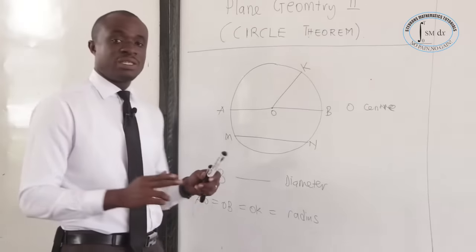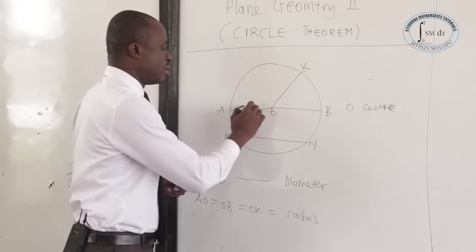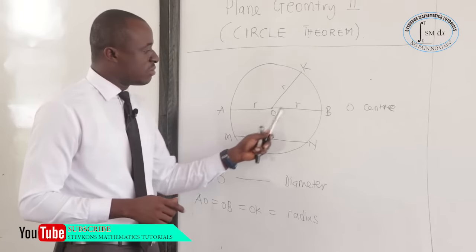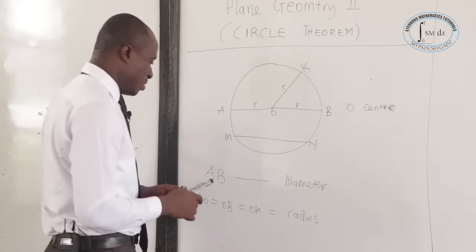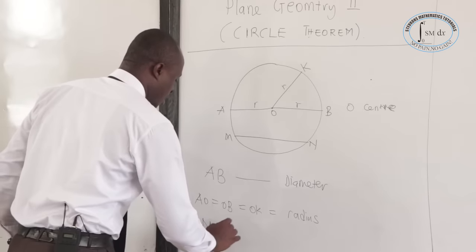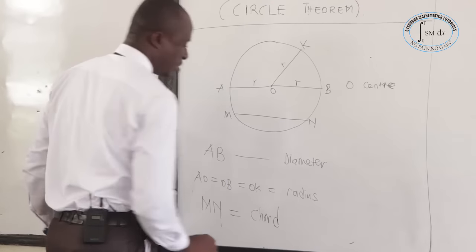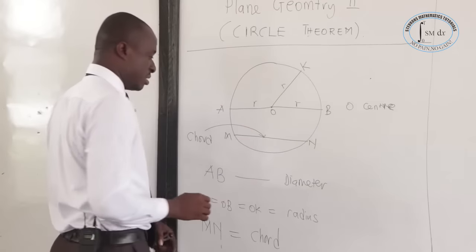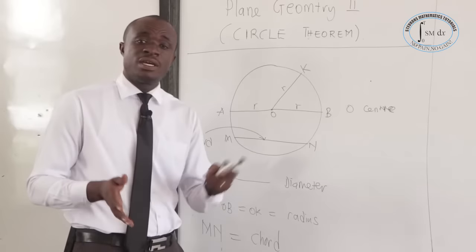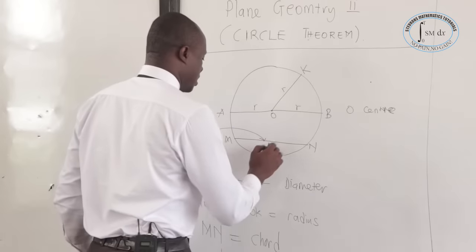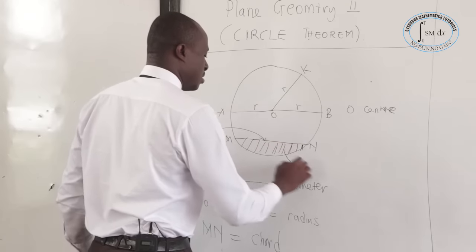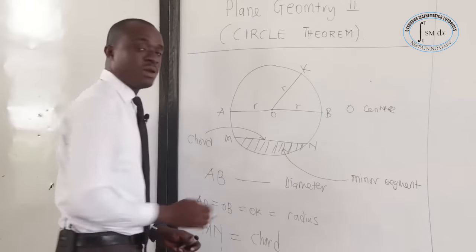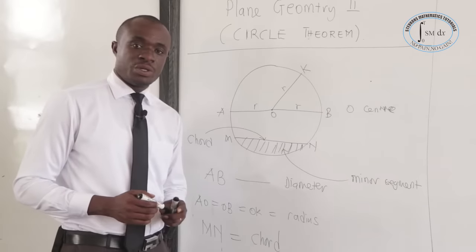Now AO is the same as OB, which is the same as OK, and these we call the radius. Radius divides a diameter into two equal parts. From center to circumference, we have R. So AO equals OB equals OK, and all of them are radius. MN is a chord — a chord divides a circle into two segments. We call the major segment and the minor segment. The shaded part is the minor segment, and the one above — the whole space — is called the major segment.